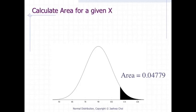The calculator calculate area for a given x can be used to calculate areas under the normal distribution. Here it is used to calculate the area above 110 for a normal distribution with a mean of 90 and a standard deviation of 12. The area is shown in the figure and numerically at the bottom of the screen. The area is 0.047790.